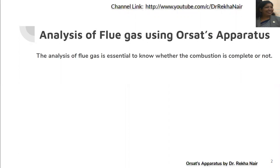It is essential to analyze the flue gas because we must know whether the combustion is complete or not. If the combustion is complete, then the product will generally be carbon dioxide. If there is carbon, it will be converted into carbon dioxide. If there is hydrogen, it will be converted into water. If there is sulfur, it will be converted into SO2, and so on.